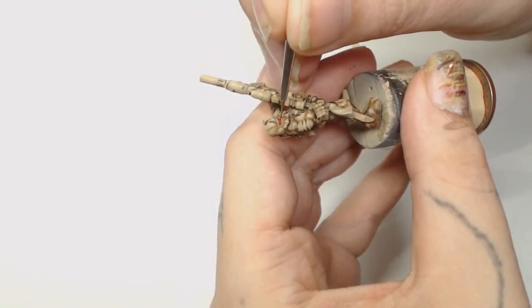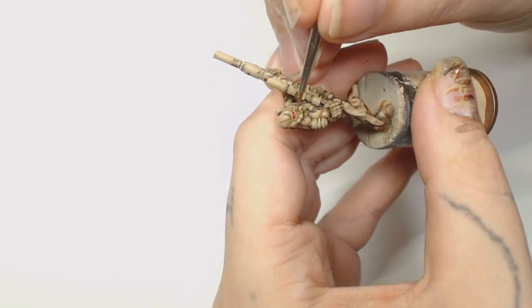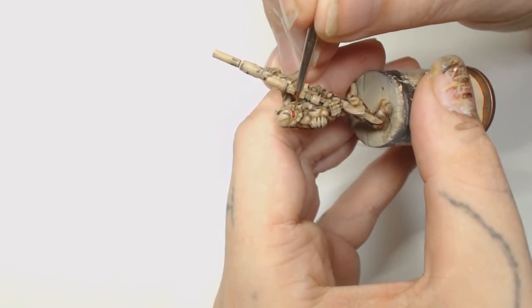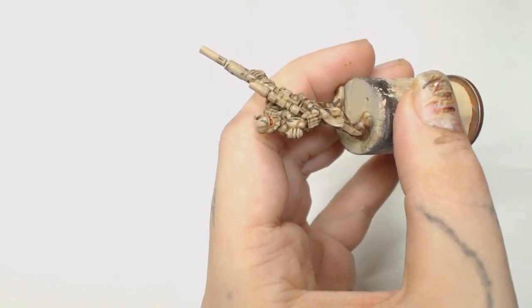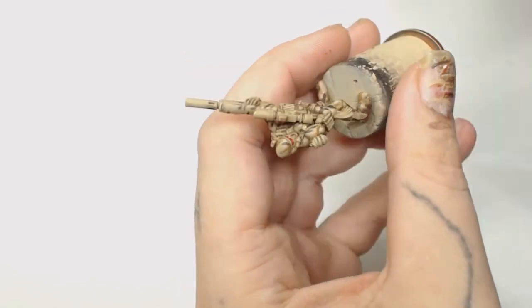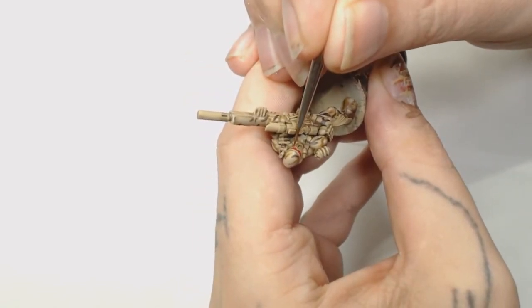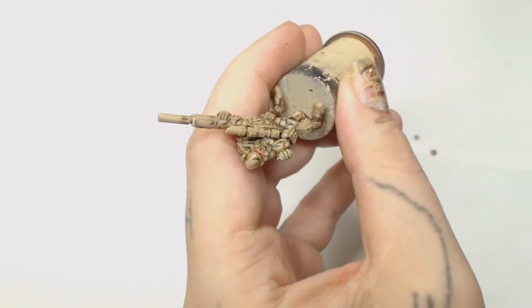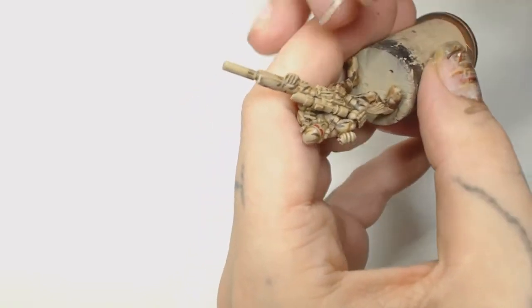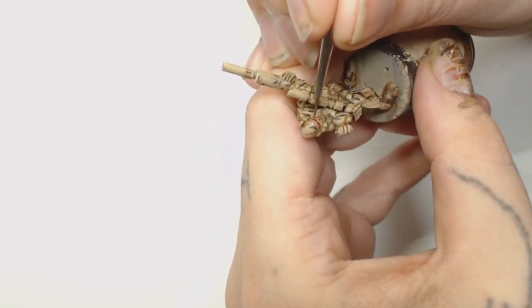After Mephiston Red, we're going to highlight the middle of the eyes with Evil Sunz Scarlet. You can do it the other way if you want - highlight the tops or bottoms depending on how you like your eyes to look. I decided to make the lenses look more round by putting the light in the center. Since he's in desert camo, I can assume he's in the desert somewhere and there's a lot of light reflecting back at his lenses. Then Wild Rider Red was used to further highlight the center of the eyes. This is really just in the center, watered down so you're going to need a couple of coats. Let it dry or blow on it and then do another layer.